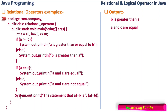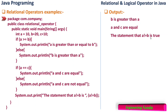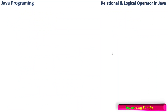The third statement uses System.out.print to check the condition a not equal to b. The value of a is 10 and b is 20, so 10 != 20 is true. We expect the output to say 'the statement that a not equal to b is true', and indeed the output confirms: 'the statement that a not equal to b is true'. This covers all the relational operators.